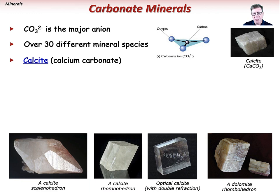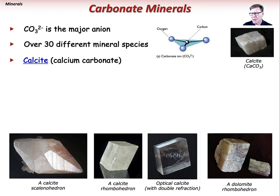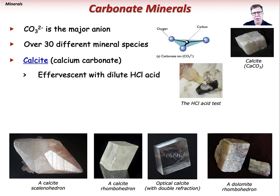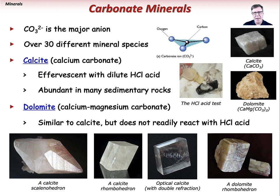One variety of calcite is known as optical calcite or Iceland spar, which has the unique property of double refraction — it splits light into two rays, so you see double. Most famously, calcite readily reacts with dilute hydrochloric acid, making it an incredibly powerful diagnostic tool for a field geologist. Dolomite, or calcium magnesium carbonate, is calcite's evil twin — very similar but does not react readily with dilute hydrochloric acid; you have to powder the mineral and it will only weakly react.